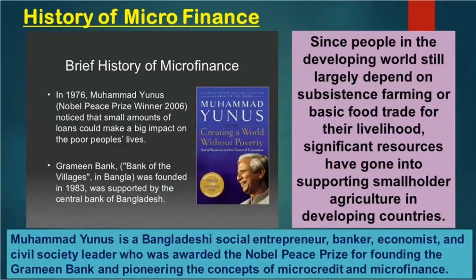Grameen Bank was founded in 1983 and was supported by the Central Bank of Bangladesh. Muhammad Yunus succeeded in providing small loans to poor people and improving their financial conditions. Since people in the developing world largely depend on subsistence farming or basic food trade for their livelihood, significant resources went into supporting smallholder agriculture in developing countries.